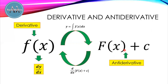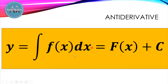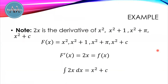Here is our formula for antiderivative. We read this one: y is equal to the integral of f of x dx, which is equal to F of x plus c. And again, c represents any constant. Let's go back to our previous example. The 2x is the derivative of x squared, x squared plus 1, x squared plus pi, or in general, x squared plus c for any constant c.